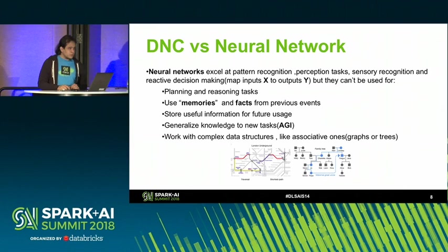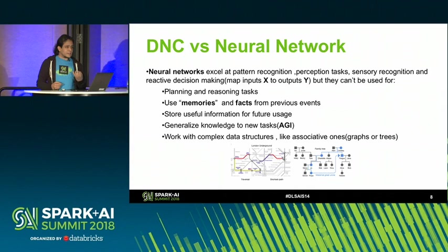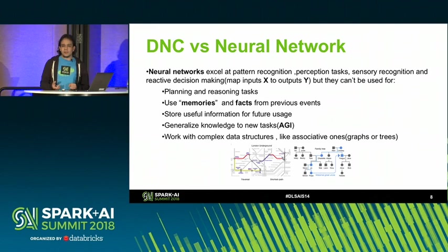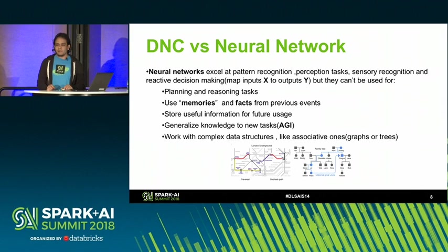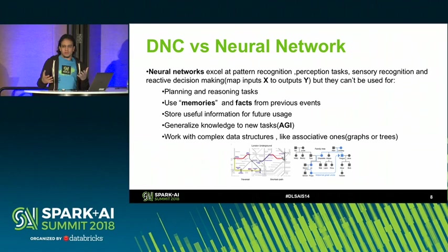So what's the difference with a common neural network? Neural networks are really good at pattern recognition, perception tasks, sensory input, and quick decision making. But they are not really good at planning and reasoning, using memories and facts from the past — though recurrent neural networks like LSTMs can do this to a small extent — generalizing to new tasks, or working with complex data structures like linked lists or graph structures. Computing systems we've been using over the years are really good at this, so we need a way to combine them with the power of a neural network. That's what the DNC is.